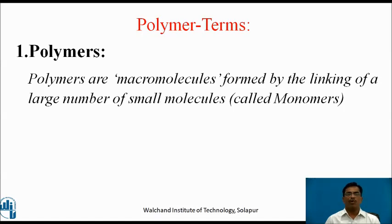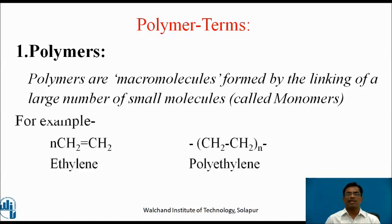Terms that are involved. The first term is polymers. Definition: polymers are macromolecules formed by the linking of a large number of small molecules called monomers. For example, when ethylene undergoes polymerization, it forms polyethylene.